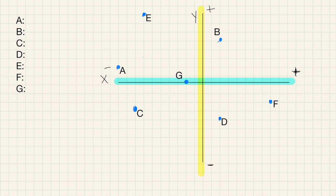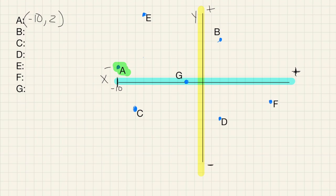Let's look at point A. Point A is right here. I'm going to start with the x, so I'm going to go over until I'm even with A — counting 1 through 10, so I'm at negative 10 right here. And then I went up 1, 2. So this point is negative 10, positive 2 because I went up.